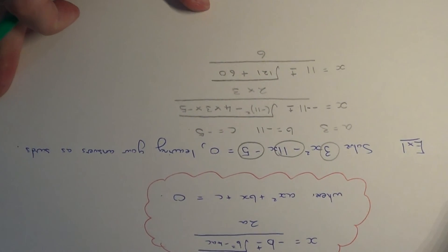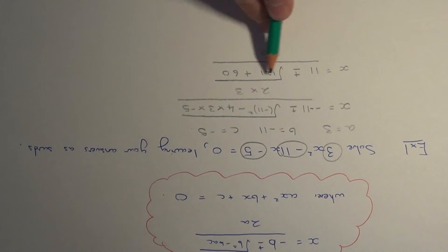Now we can work out the bit underneath the square root. 121 add 60 is 181. And this is being divided by 6.